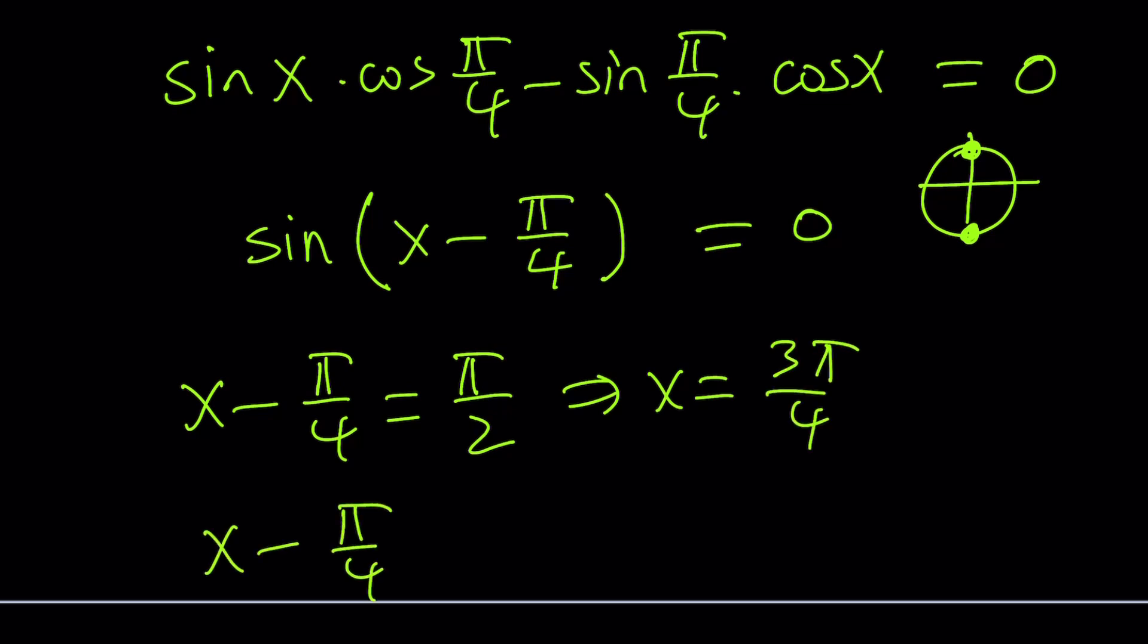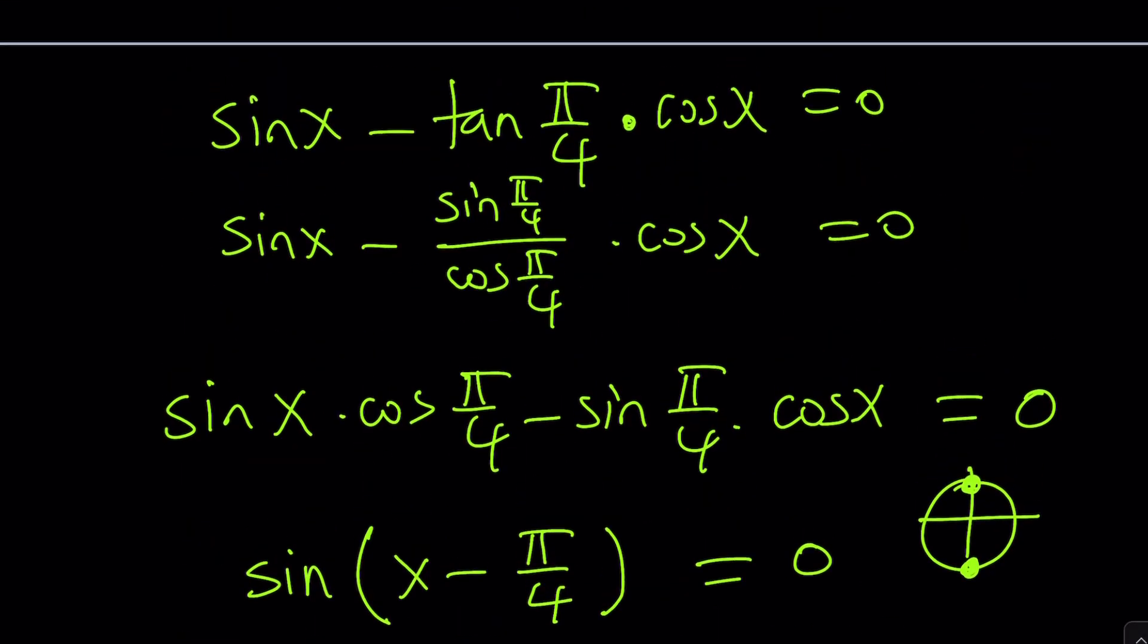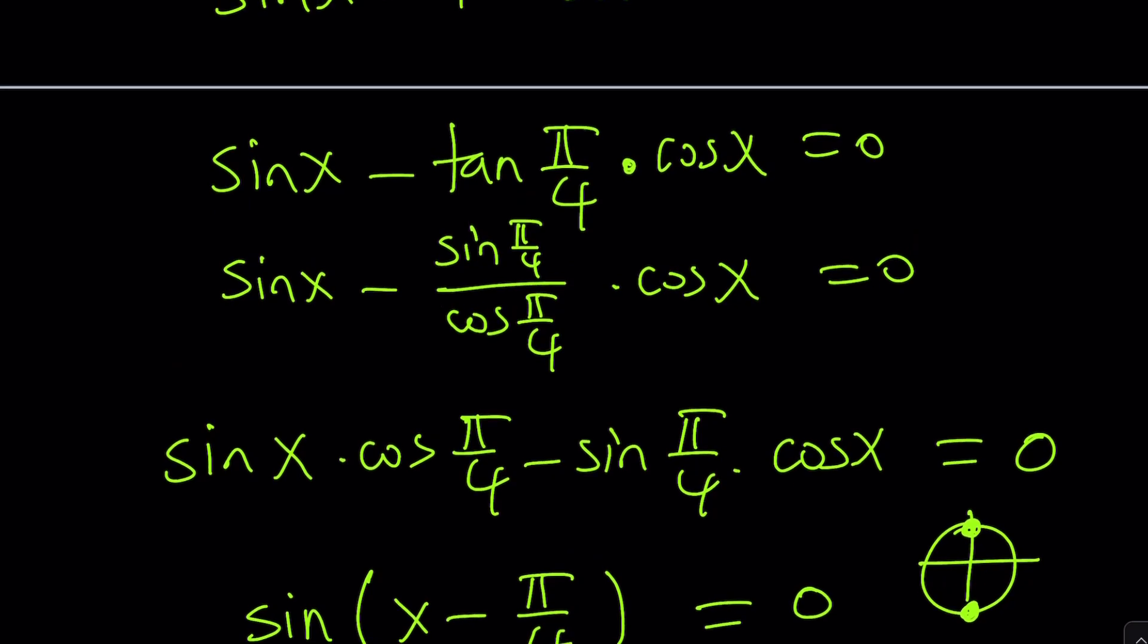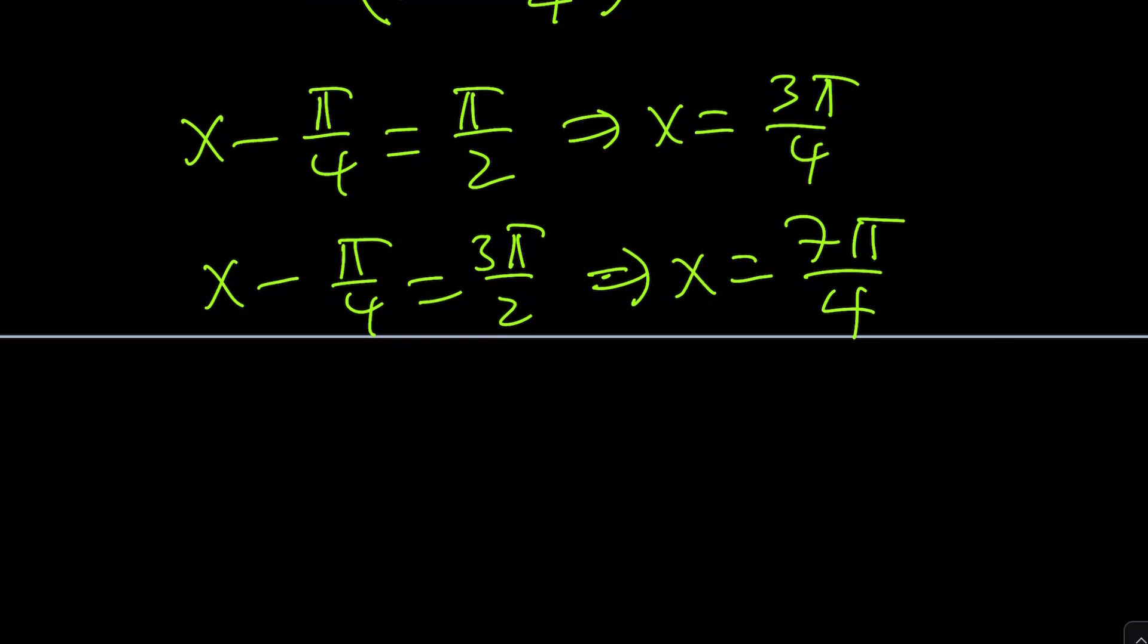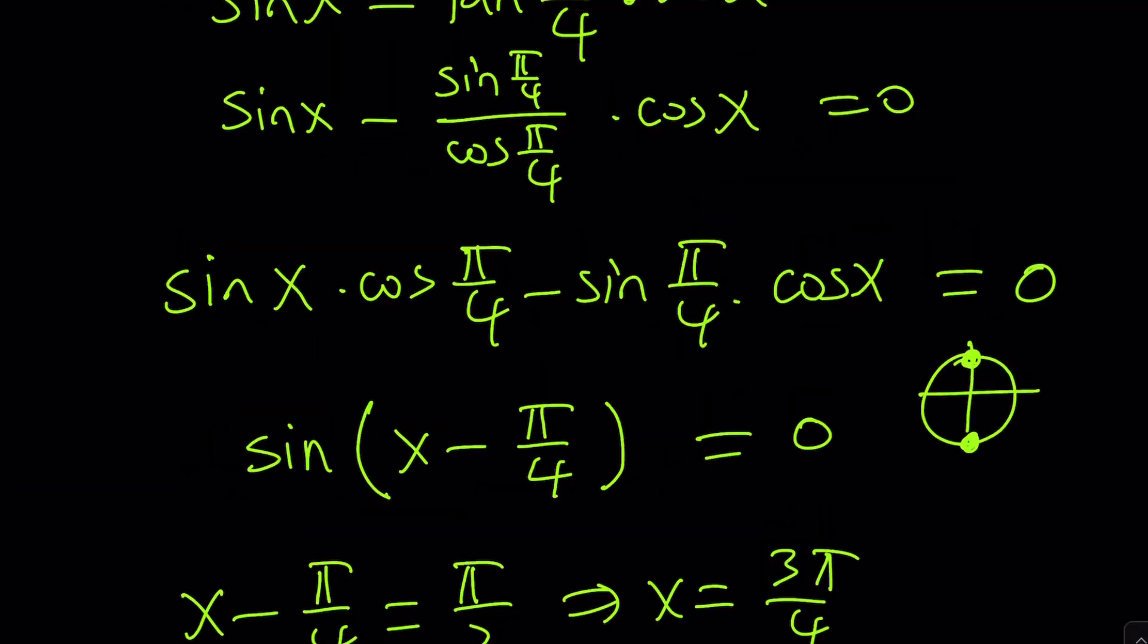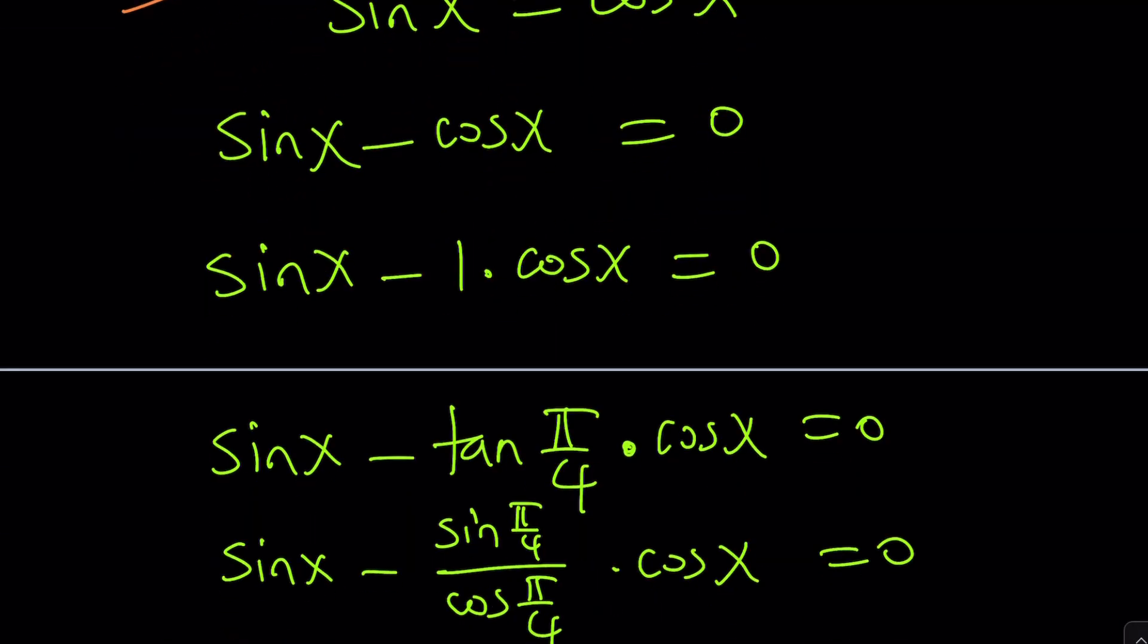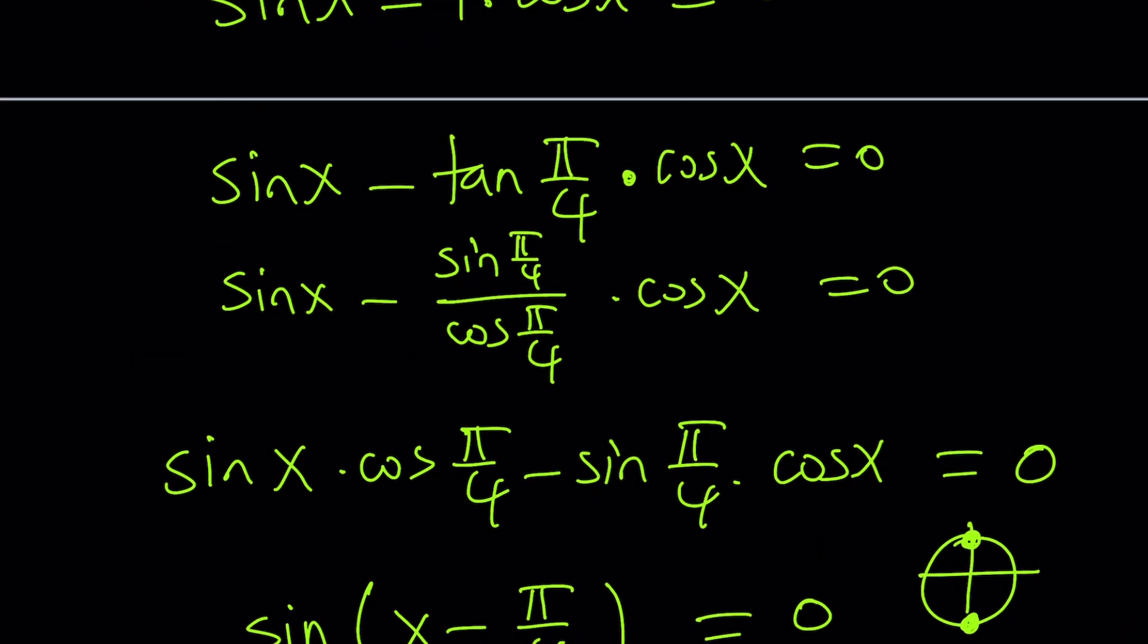Or x - π/4 is equal to 3π/2, which is 6. Then from here you're going to get x equals 7π/4. Of course, we have to make sure that cos(π/4) is not zero, but it's not zero, so we're good. That gives us another solution. This time I didn't find the general solutions, I just found particular solutions.